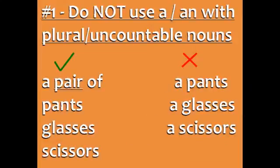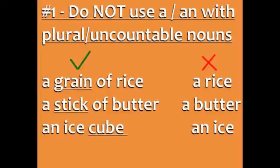Don't say 'a pants,' 'a glasses,' or 'a scissors.' You need to say 'a pair of pants,' 'a pair of glasses,' and 'a pair of scissors.' Rice, butter, and ice are also uncountable, so you can't use the word 'a,' but you can say 'a grain of rice,' 'a stick of butter,' and 'an ice cube.'